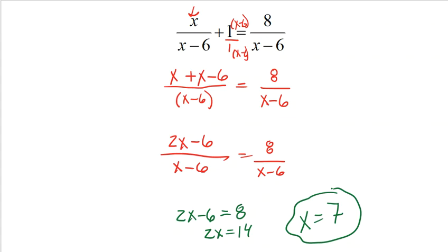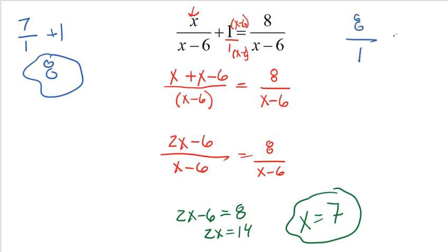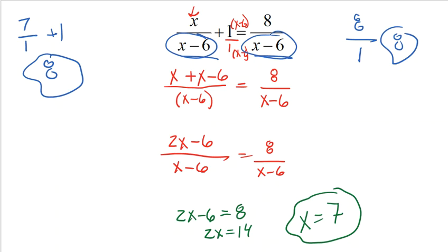Always check your work. If I plug in 7 into the original equation, I get 7 over 1 plus 1, which is 8 on the left-hand side. On the right-hand side, I get 8 over 7 minus 6, which is 1, so that's 8. My left side equals my right side. Also, when working with rational equations, you are never allowed to have the denominator equal 0. That doesn't happen here because plugging in 7 gives a 1 in the denominator.